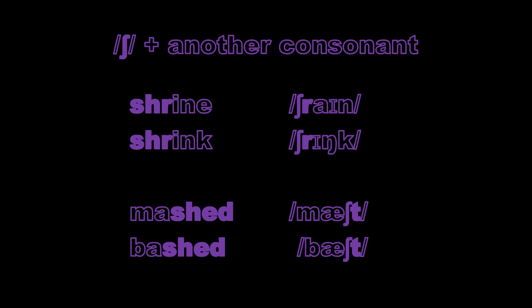It also occurs with other consonants in clusters, such as in the words shrine and shrink — with the r, so shr. And it also occurs with a t at the end of words such as mashed and bashed. This is a common consonant cluster when we're looking at the past tense of many verbs.